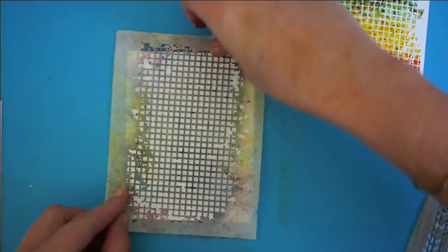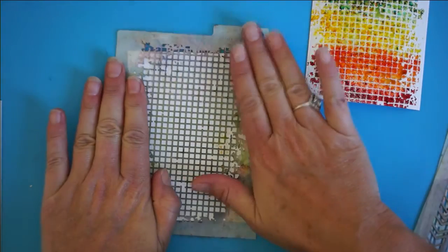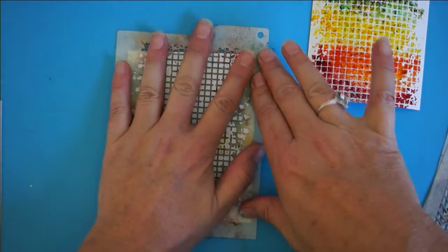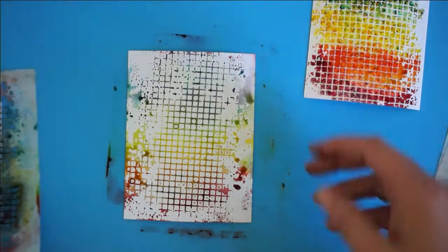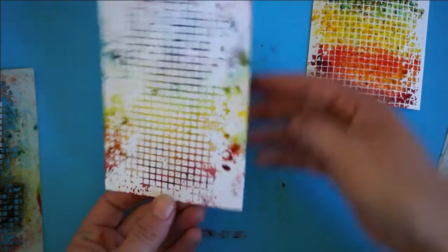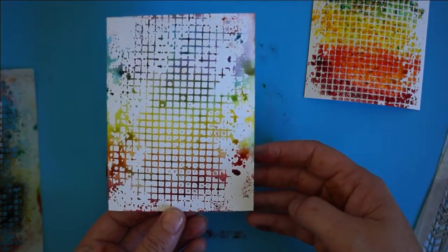Now I'm going to take my ordinary cardstock and I'm going to flip that stencil over and use up the rest of that ink that I've sprayed over that stencil because you just don't want to waste it and it comes up with effects just great in itself.